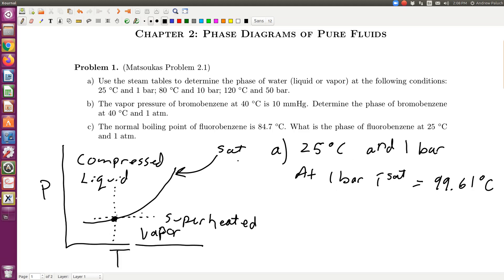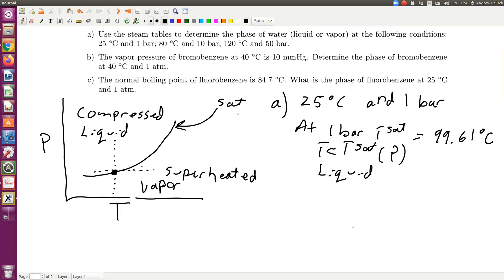If I'm looking at my sketch in my phase diagram, we're going to look at reading along an isobar. So if pressure is fixed at one bar, my temperature is 25 degrees C or 99.61. A temperature of 25 degrees, then T is less than T_sat. So that's going to put me in the liquid phase. T is less than T_sat at P, and so that's going to put me in my liquid phase. Promise, my handwriting will improve. New tablet.